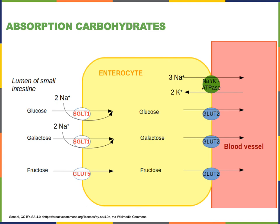Carbohydrates are absorbed in the form of monosaccharides. Glucose is the primary monosaccharide that's absorbed from the diet, and glucose enters enterocytes through a mechanism of secondary active transport. The sodium glucose linked transporters (SGLT) are co-transporter proteins that enable glucose to enter the enterocyte as sodium also enters through the SGLT protein. Sodium is moving down its concentration gradient into the enterocyte, and this movement of sodium drives the transport of glucose. The low concentration of sodium inside the enterocyte is maintained by the sodium potassium pump — the sodium potassium ATPase — that uses primary active transport to drive sodium out of the cell and potassium into the cell.